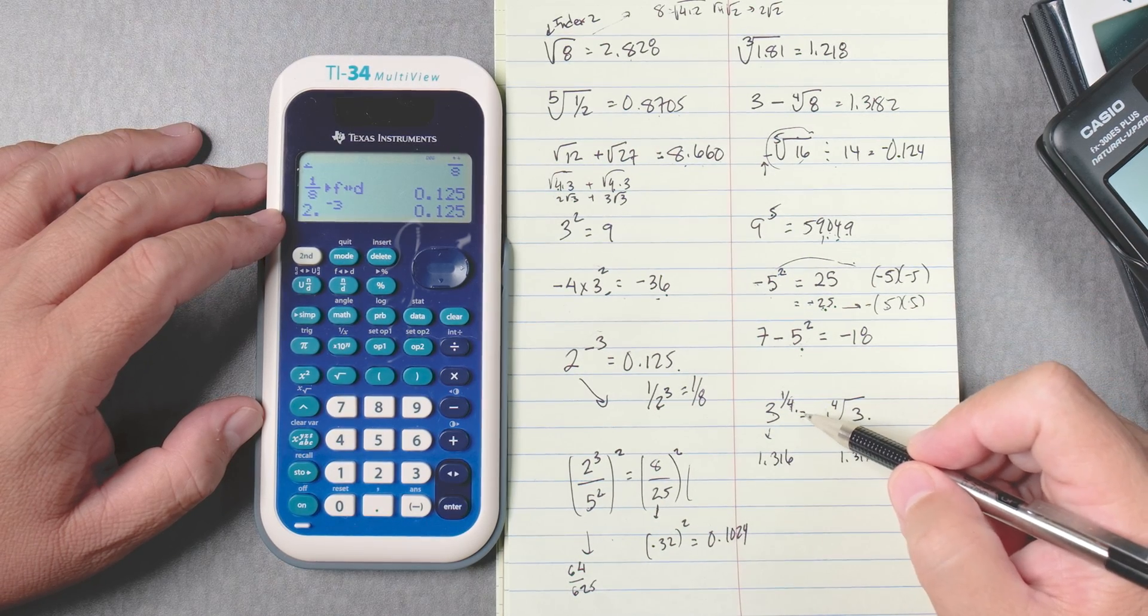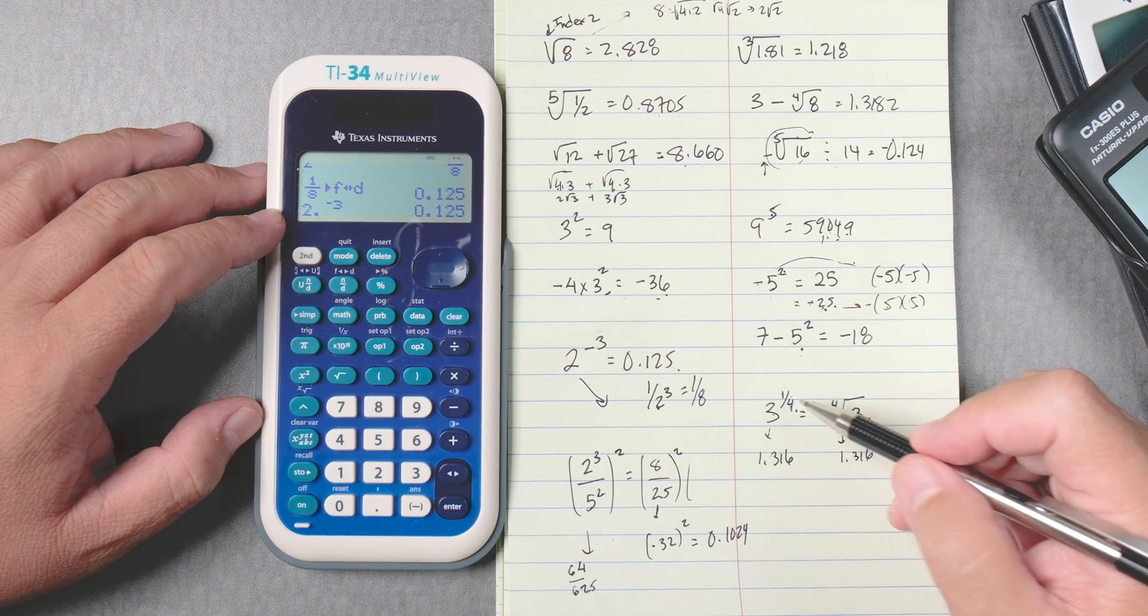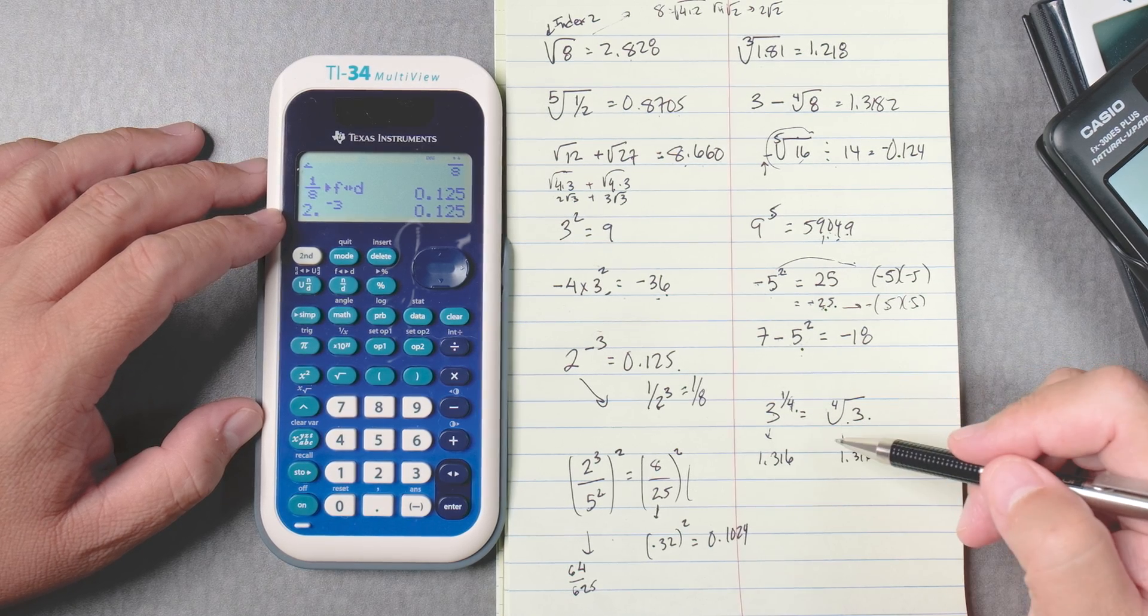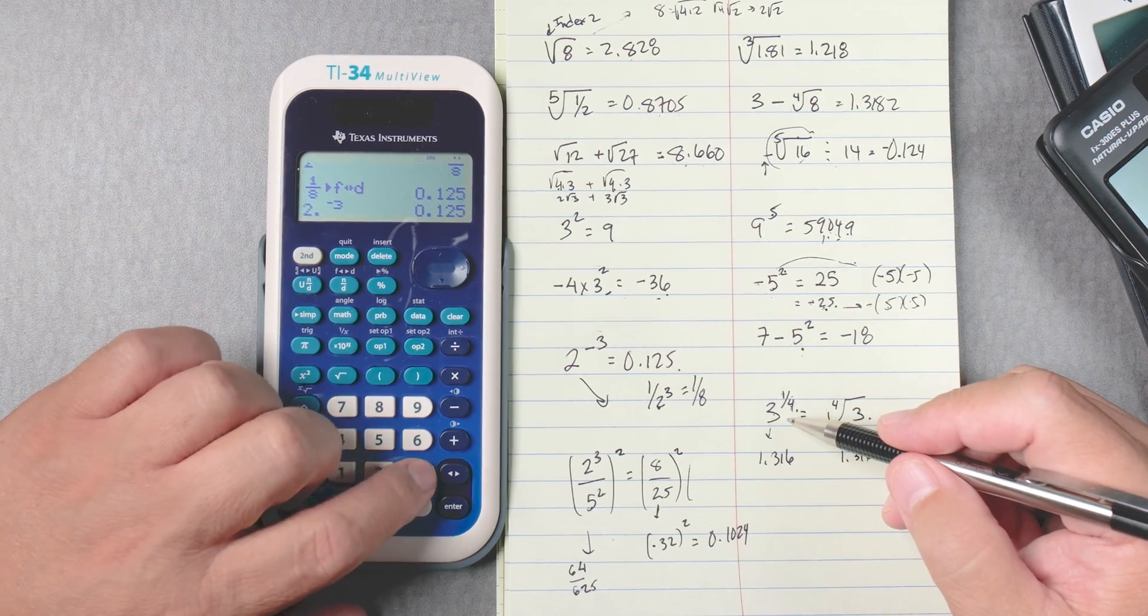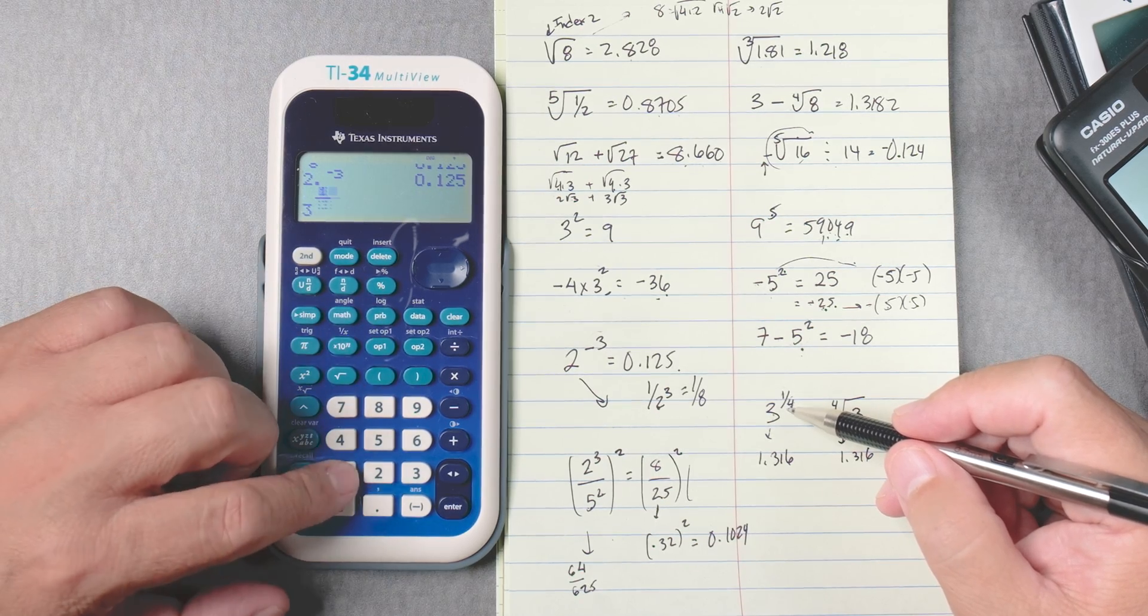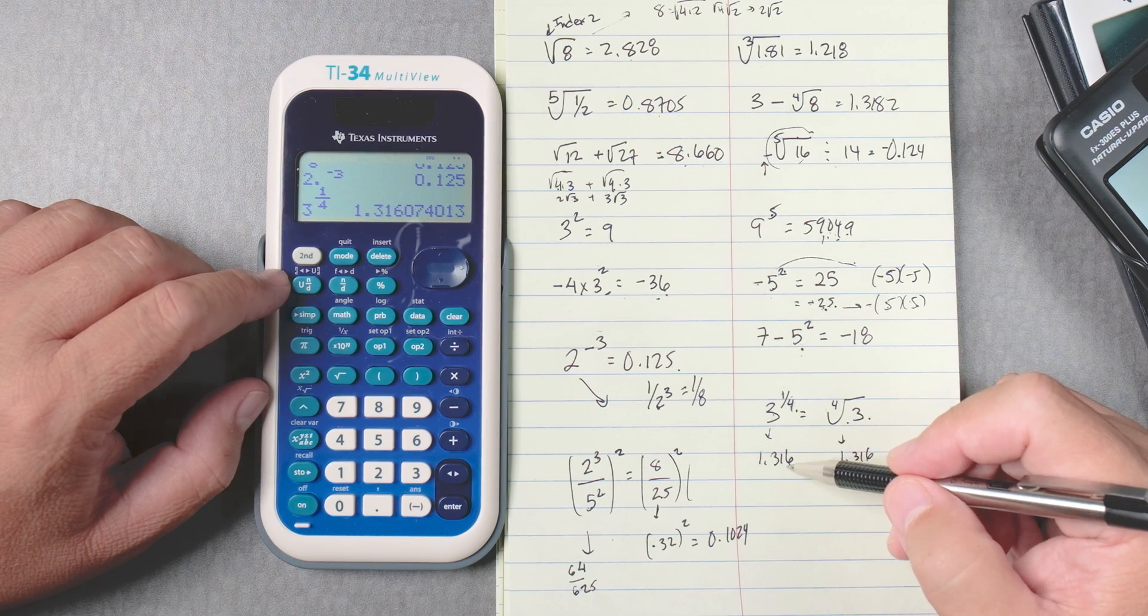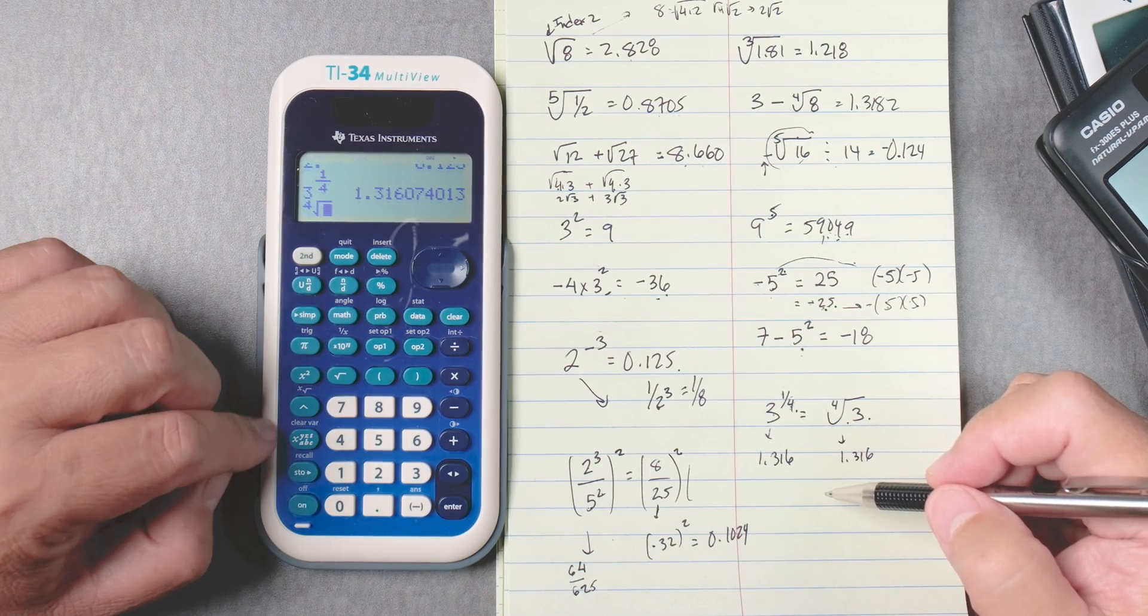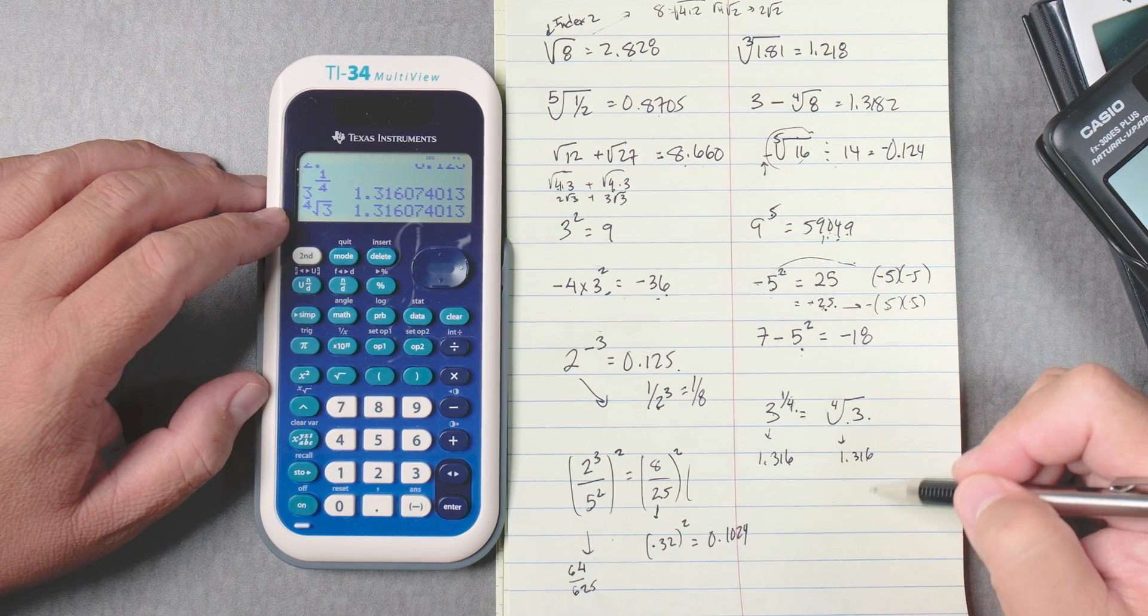Okay, 3 to the 1/4 equals the 4th root of 3. These two are equivalent. Okay, one has a power, one has a root, and this is why we study powers and roots together, because they're equivalent to each other. So how do we do this one? This is 3, caret, then n over d, 1, bring it down, 4, enter, 1.316, or the 4th root, press 4, 2nd, caret, 3, enter, 1.316. Perfect.